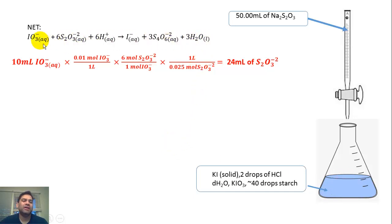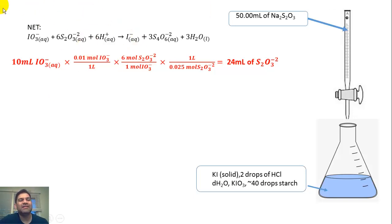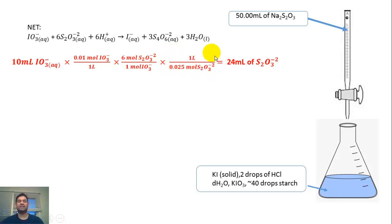You're going to look at the net equation. You're going to put 10 mL in the flask for the titration. The concentration in the bottle is 0.01 molar KIO3. According to the net equation, there are six moles of thiosulfate that react with one mole of IO3-. The concentration in the bottle is about 0.025 molar — not the accurate concentration, which is why you're standardizing. Doing the stoichiometry, you get about 24 mL of S2O3 before the color change, but that's a guess.